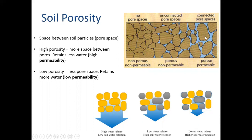From left to right, looking at the leftmost image - you have barely any space between these soil particles. That means there's no space for water to flow. It's not porous at all. It's not very permeable; it has very low permeability. So not a lot of water - really no water - can flow through that. That is a very low permeable soil.